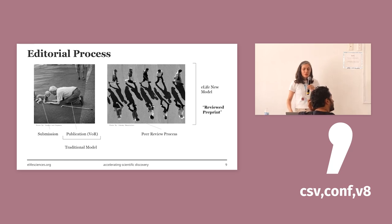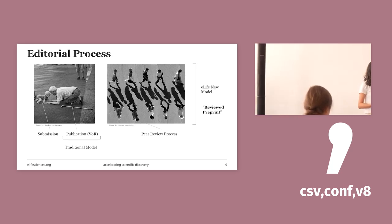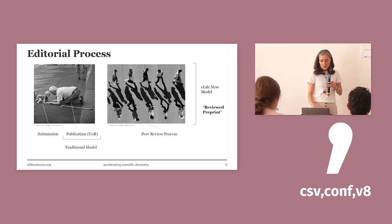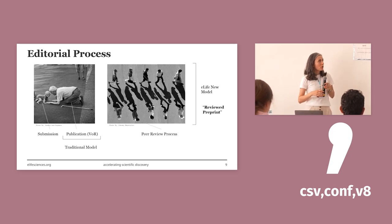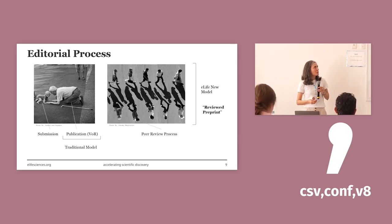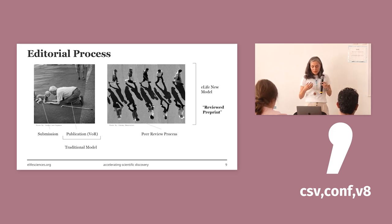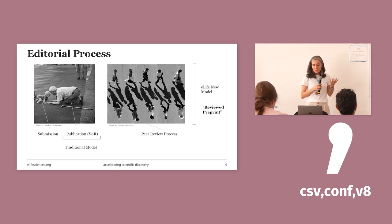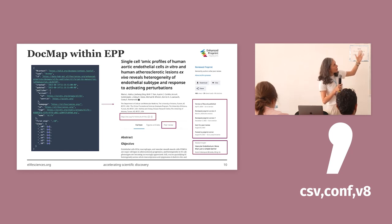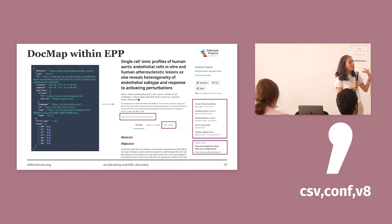To make this process more transparent and fair, eLife introduced a new model. Instead of making a final decision on whether to accept or reject a paper, eLife started publishing each version along with its reviews — we call that reviewed preprints. To make all this information accessible to everyone, we needed a way to organise and represent this data. That is where the DocMap project came in.